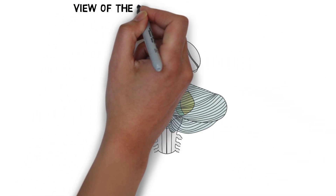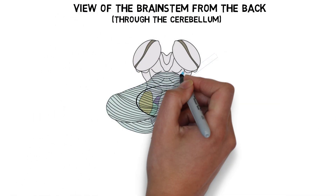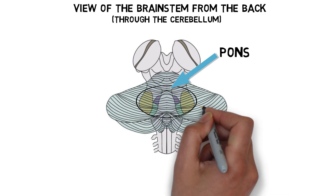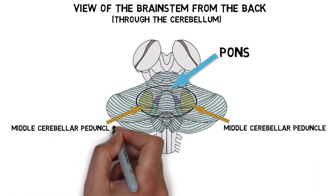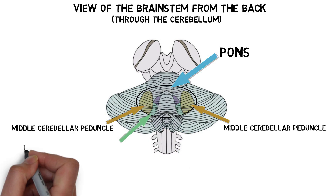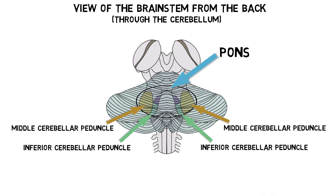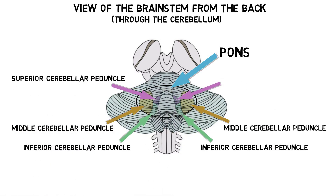The basal pons doesn't form a direct connection between the cerebellar hemispheres, but the pons is attached to the cerebellum by the middle cerebellar peduncles, a major pathway between the brain stem and cerebellum. The inferior cerebellar peduncles also travel through the pons to carry information to the cerebellum, and the superior cerebellar peduncles enter the brain stem at the level of the pons and carry information from the cerebellum to the brain stem.